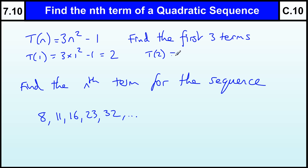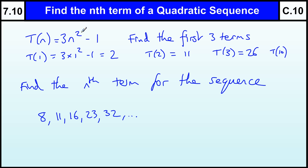The second term: 2 squared is 4, times 3 — remember you must square before you times — so 4 times 3 is 12, minus 1 is 11. Term 3: 3 squared is 9, times 3 is 27, take away 1 is 26. And then you can do any term you want — term 10 say: 10 squared is 100, times by 3 is 300, take away 1 is 299. That rule allows you to work out any term of the sequence.